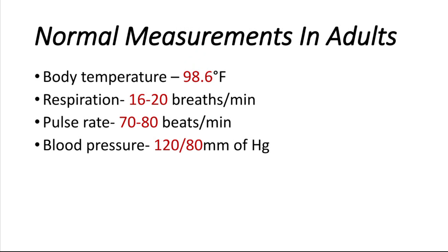The normal pulse rate of an adult is 70 to 80 beats per minute, and the average pulse rate is 72 beats per minute. Then, the blood pressure: the normal blood pressure is 120 by 80 mm of Hg, where 120 is systolic.